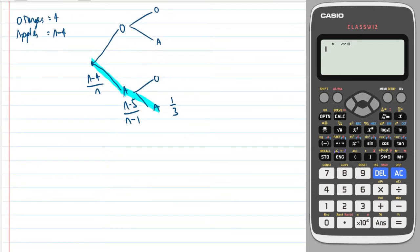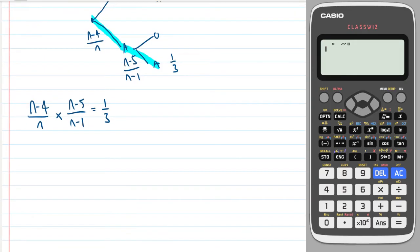So we get this equation: n minus four over n multiplied by n minus five over n minus one is equal to one third. We can then multiply the top by the top and the bottom by the bottom to get n minus four times n minus five all over n times n minus one is equal to one third.